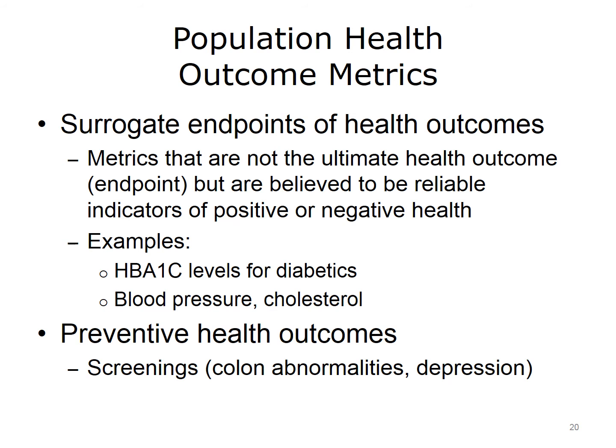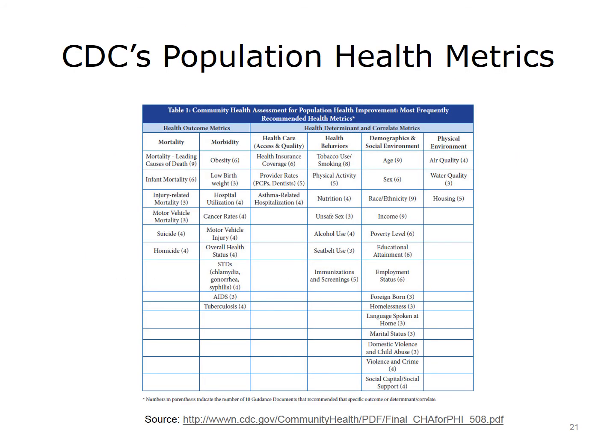Population health also highlights the role of prevention through screenings for conditions such as colon abnormalities and depression. A longer list of metrics from the Centers for Disease Control (CDC) covers population health, showing the most frequently recommended health metrics for community health assessments. These include health outcome metrics categorized by mortality and morbidity, as well as health determinant and correlate metrics relating to healthcare access and quality, health behaviors, demographics, social environment, and physical environment — such as obesity measures, health insurance coverage, tobacco use, race, and air quality.